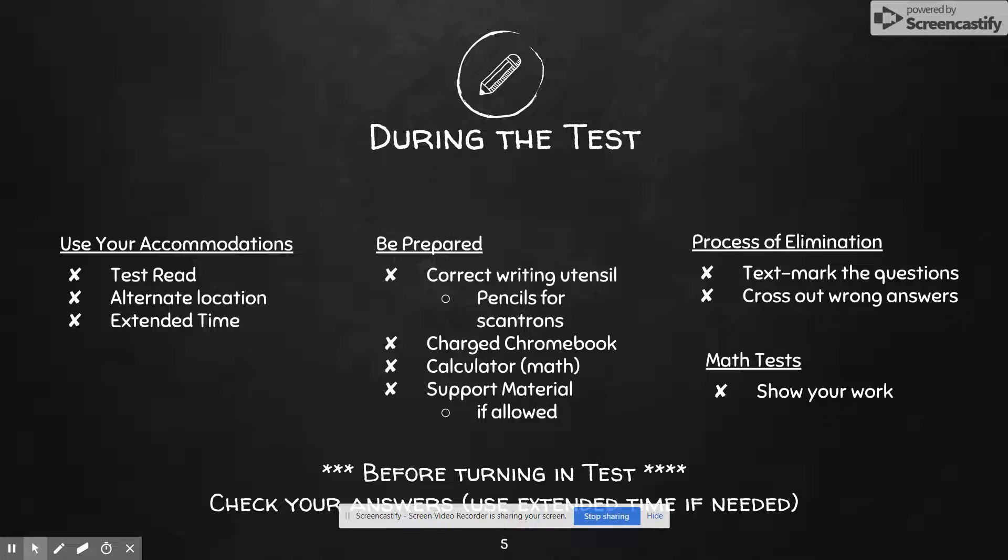For a multiple choice test, I always say look at it as a process of elimination. Text mark the questions. Even if your teacher says you cannot write on the test, based on the fact that you get testing accommodations, you can mark it up and you could tell your teacher Mrs. Sprangle said I can. I would text mark the question, see if there's something in the question that you really need to pay attention to. And then if out of the four you're really struggling figuring out which one's the right answer, cross out the ones that you know are wrong. Because if you have four options, you have a 25% chance of making an educated guess. But if you're able to cross out one or two, your chance of picking the right answer goes up to 50% if you're just guessing between two of them.